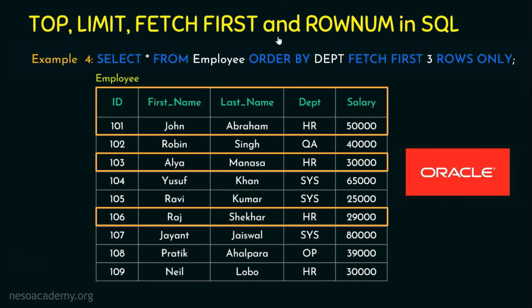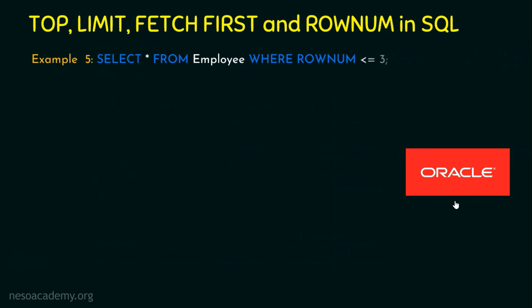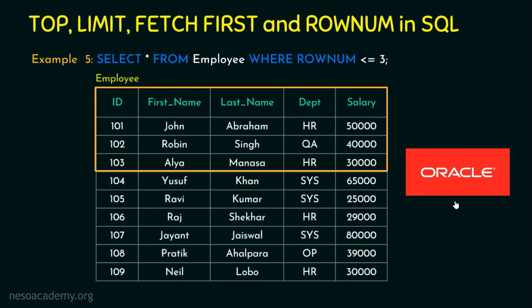Let's see another example equivalent to FETCH FIRST, which is ROW NUMBER — also applicable for Oracle databases. Example 5 uses the same table: SELECT * FROM employee WHERE ROWNUM <= 3. ROW NUMBER less than or equal to 3 means the first three rows. You may ask: what's the difference between FETCH FIRST and ROW NUMBER? The difference is between versions of Oracle.